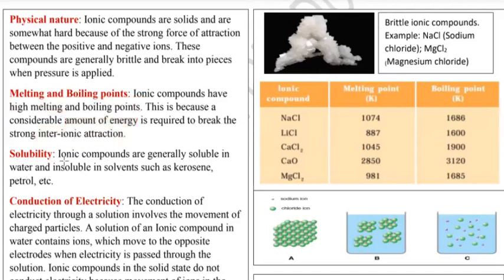Now let's talk about solubility. The ionic compounds are generally soluble in water and insoluble in solvents such as kerosene, petrol, etc. Ionic compounds are easily dissolved in water, but in solvents like kerosene or petrol they do not dissolve.